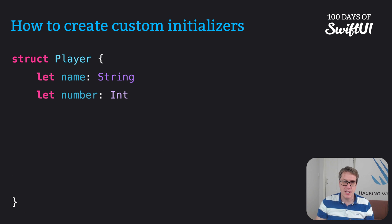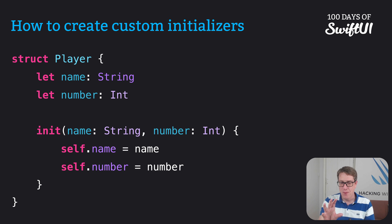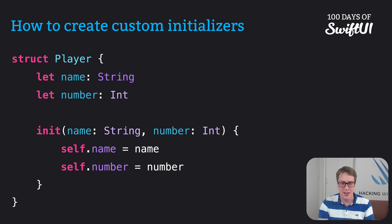We would write: init(name: String, number: Int) { self.name = name; self.number = number }. That works exactly the same as the previous memberwise code — it'll be identical to create an instance. However, it's now up to us. We can add extra things as needed and customize it.